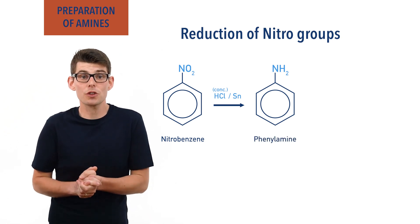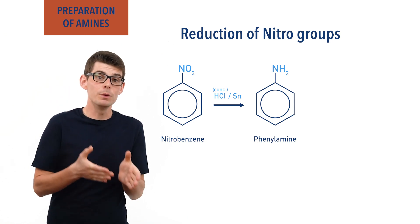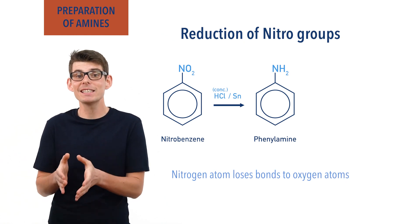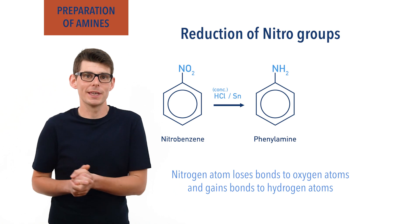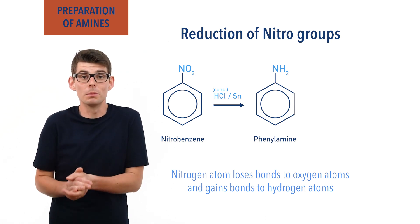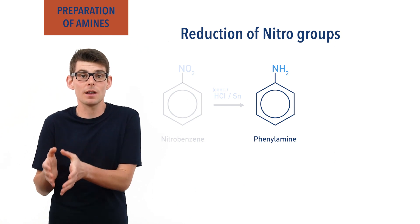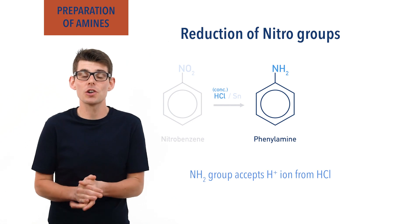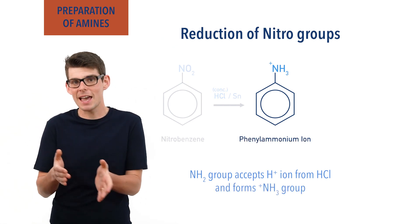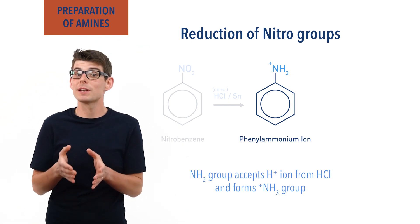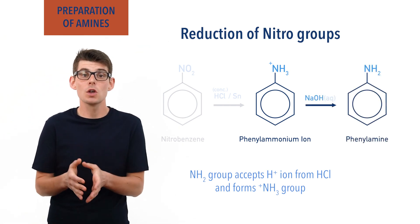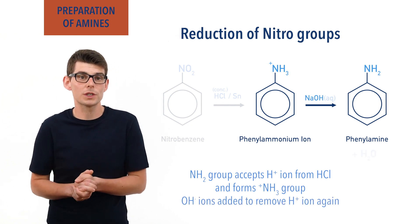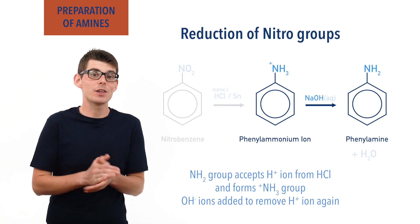The reaction is a reduction as the nitrogen loses covalent bonds to oxygen, which is more electronegative than itself, and gains bonds to hydrogen. The amine formed acts as a base and accepts H+ ions from the concentrated hydrochloric acid present, forming a positively charged phenylammonium ion. To get the phenylamine, sodium hydroxide is added, and the hydroxide ions take an H+ ion from the phenylammonium ion and form water, leaving phenylamine with an NH2 group.